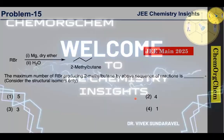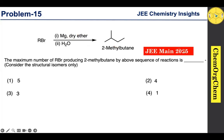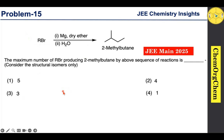Today's problem is from JEE Main 2025. An unknown alkyl bromide reacts with magnesium in dry ether, followed by reaction with water, to produce 2-methylbutane as the final product. We need to find the maximum number of structural isomers of alkyl bromide that can result in this 2-methylbutane product. There are four options given — let's solve together.